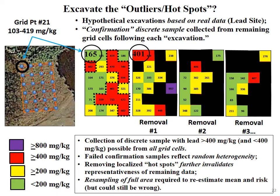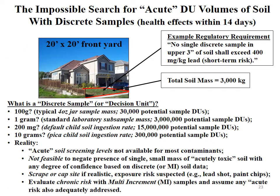This random heterogeneity is really what causes so many problems in the field. Resampling of the full area might show no risk — or it may show continued risk — but either result could still be wrong. Another reason people think we need discrete samples is the seemingly impossible search for an acute risk decision in a volume of soil using discrete samples or a small spot of soil.